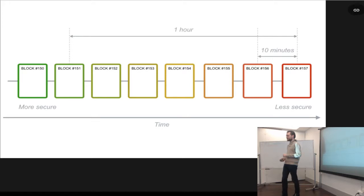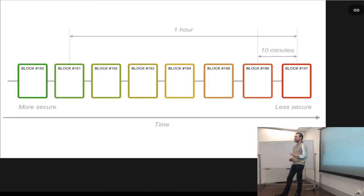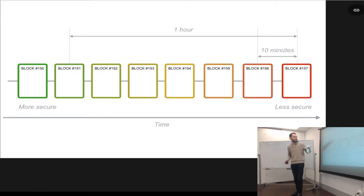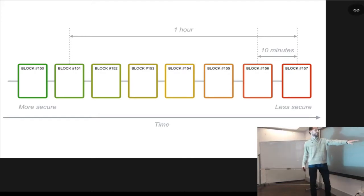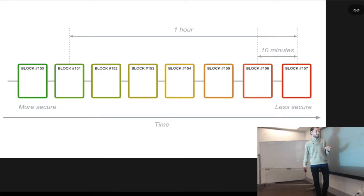It looks something like this. This is Bitcoin's blockchain — you can tell because of the timing. Each block on the Bitcoin blockchain is 10 minutes long. So you can see this would be where we're at right now, at block 157, and then the previous block, 156, all the way down through.